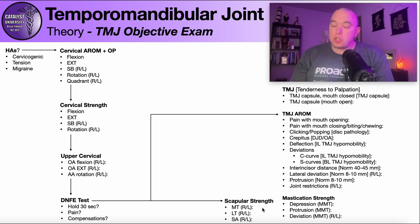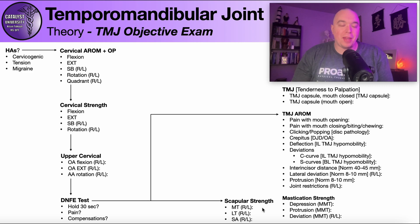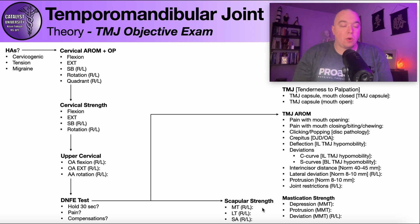If there is shoulder girdle weakness, you want to start addressing that. If you don't have time to formally assess it, giving somebody rows is a pretty benign exercise with a lot of benefits and really not a lot of costs — it's a pretty safe exercise to give. Or you can do scapular retractions. I sometimes do that even without assessing the strength, because in the vast majority of people with TMD, let's be honest, they have scapular weakness. Another thing not listed here is thoracic mobility — thoracic extension, flexion, side bending, and rotation — and the most common two to be limited in TMD are thoracic extension and thoracic rotation.